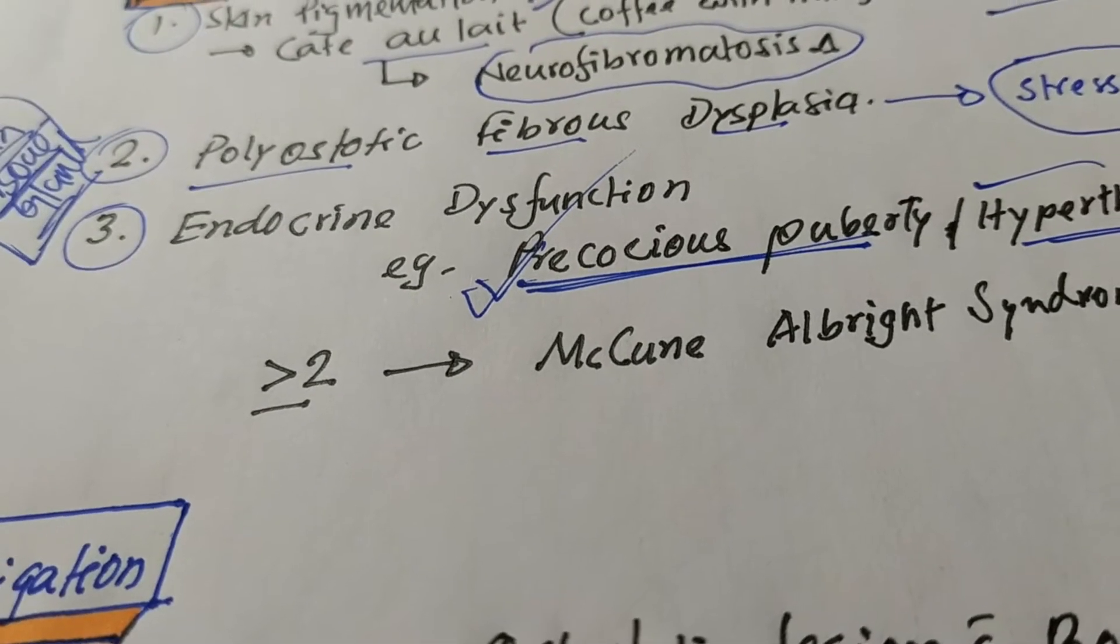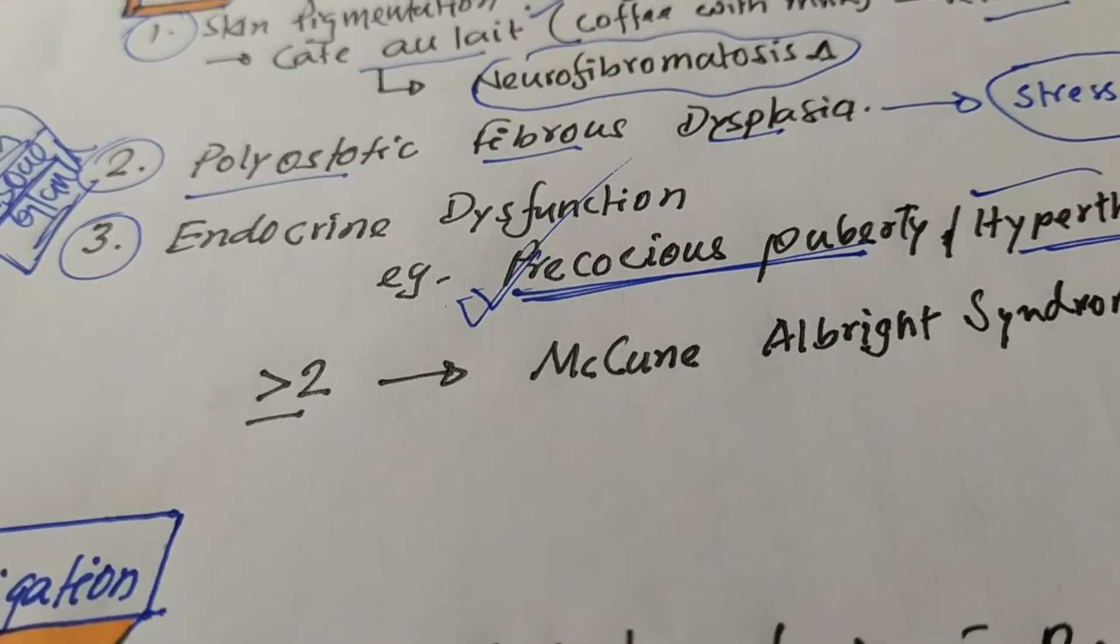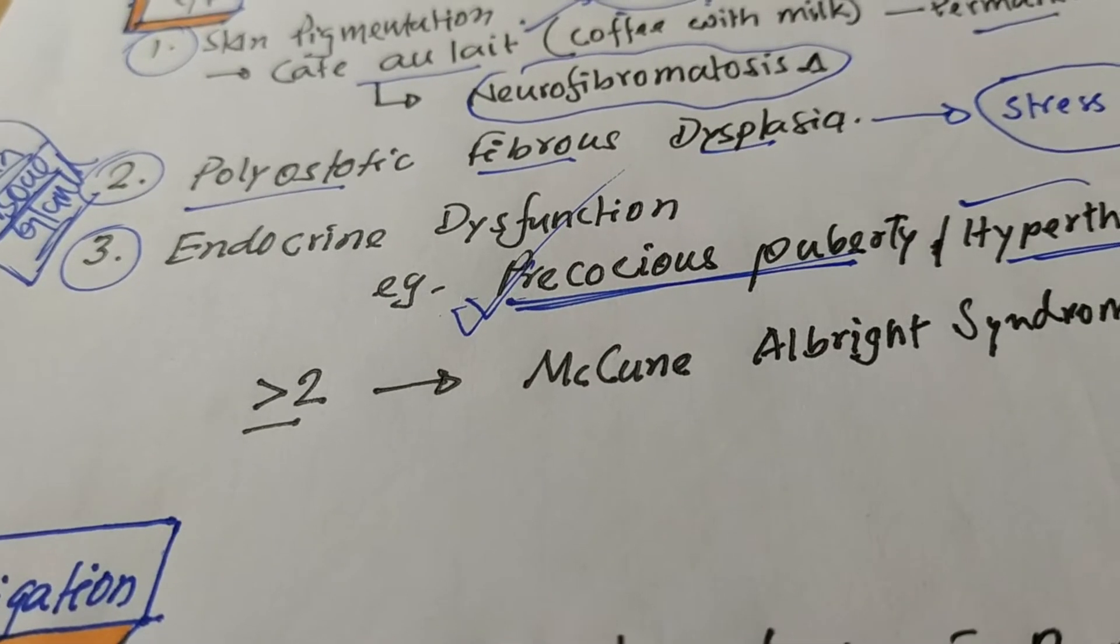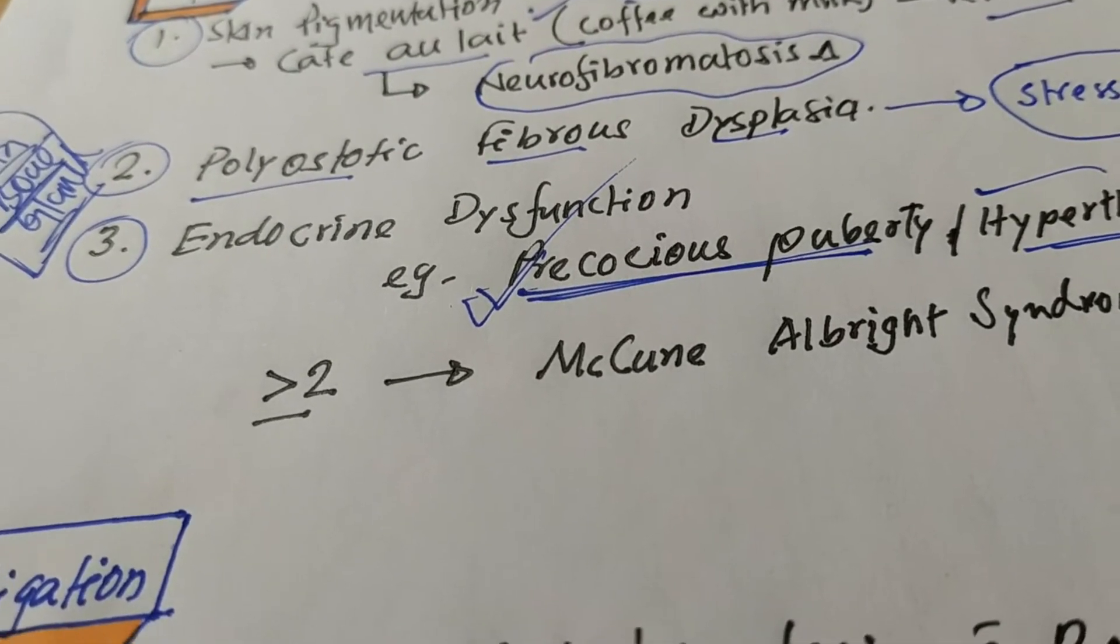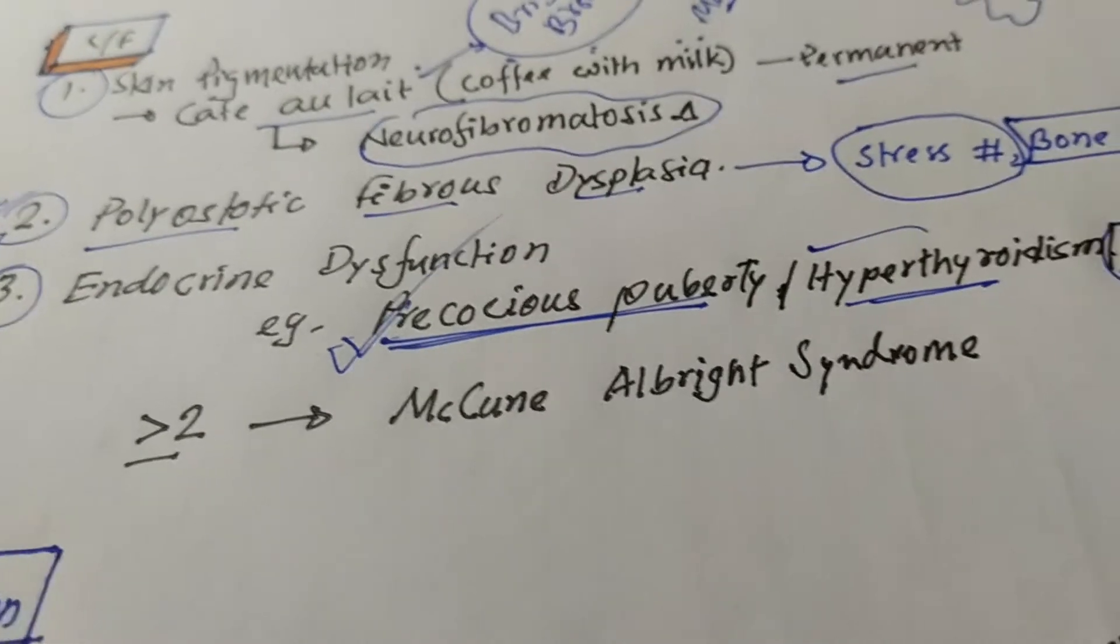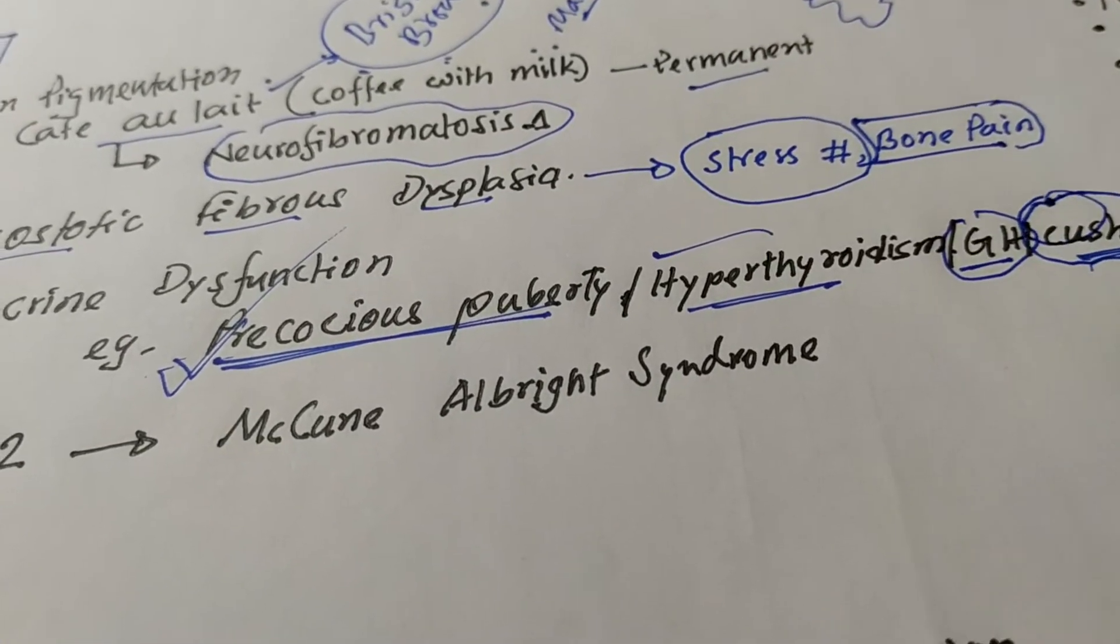Other endocrine dysfunctions may be hyperthyroidism, growth hormone, excess growth hormone or very rarely, patient may be with Cushing syndrome. Cushing syndrome.